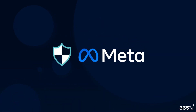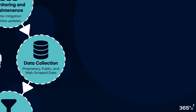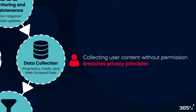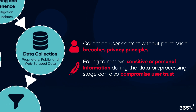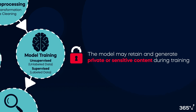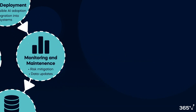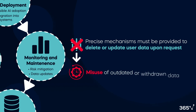Privacy issues, like those in the Meta case, can arise at multiple steps of the AI lifecycle. Consider the data collection step – collecting user content without permission breaches privacy principles. Furthermore, failing to remove sensitive or personal information during the data pre-processing stage can also compromise user trust. Once this unfiltered data is used to train the model, the problems can be carried over to subsequent stages of development. The model may retain and generate private or sensitive content during training, worsening the problem. In the monitoring and maintenance phase of the deployed model, precise mechanisms must be provided to delete or update user data upon request. Failing to do so can lead to the misuse of outdated or withdrawn data, causing problems like the one with Meta.